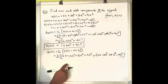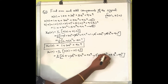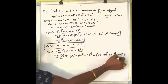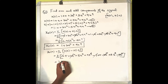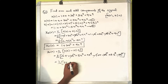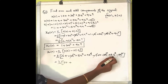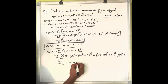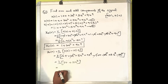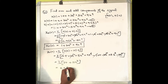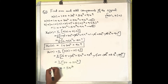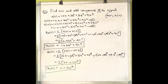Now subtracting: 1 and 1 cancel, 3t² and 3t² cancel, 9t⁴ and 9t⁴ cancel. What remains is 2t + 10t³. Taking half gives x_o(t) = t + 5t³. This is the odd part of the signal. So we have found both the odd and even components.